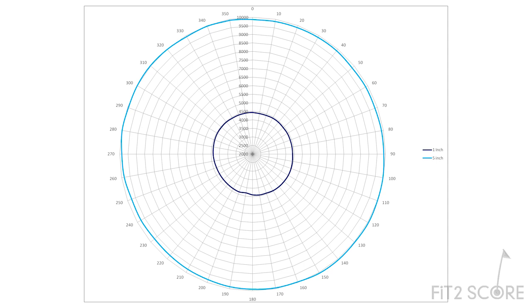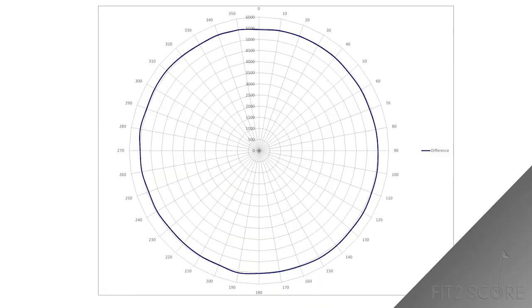Here is a plot of the measurements of this shaft taken every 10 degrees. The two measurements are shown here. The inner ring is the 1 inch deflection and the outer ring is the 5 inch deflection. When I subtract one from the other, we get the difference of the two. The technique is used to remove the bow effect from the measurements.